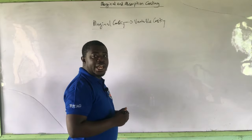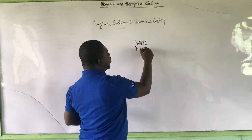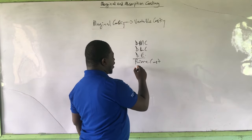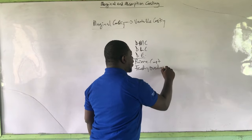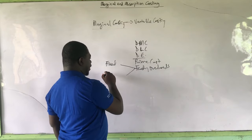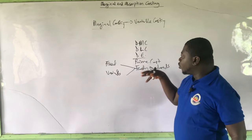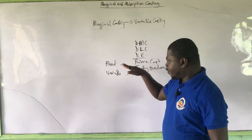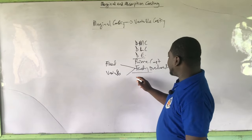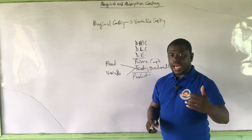We know that for the production cost of every product, it is your prime cost, which is made up of your direct material cost, your direct labor cost, your direct expenses — making up your prime cost. And then there is factory overheads. These factory overheads are made up of fixed factory overheads and then variable factory overheads. When we add the two, we are going to have the total production cost. So production cost is made up of your prime cost and factory overheads, as we have already studied.